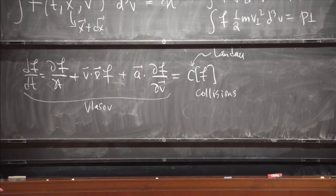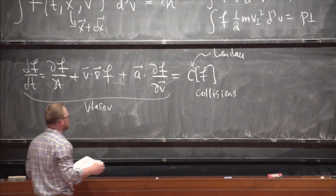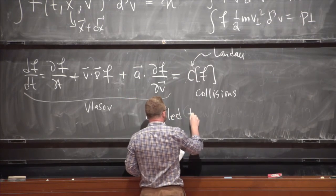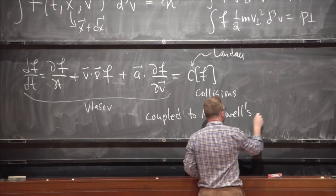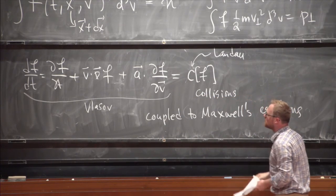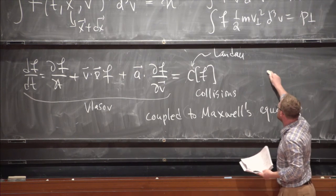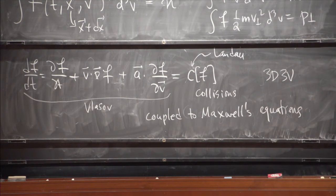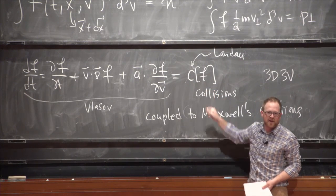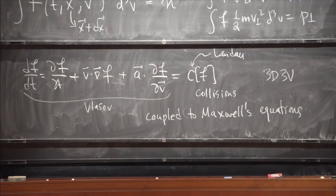Professor Spakovsky will talk about how to solve this system on a computer—it's 6D (3 spatial + 3 velocity dimensions), so it's quite expensive. On page 57 of the notes I list properties of the collision operator: it conserves particle number, conserves momentum, conserves energy, and satisfies a Boltzmann H-theorem so that entropy always increases.